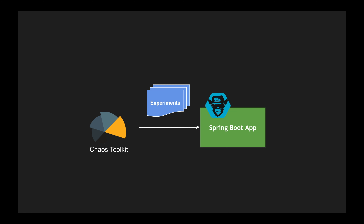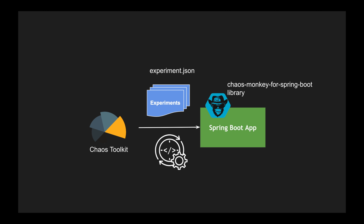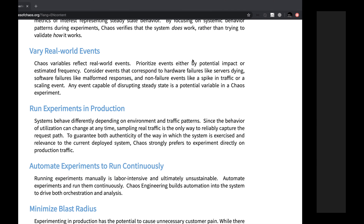For our demo, we are going to use only the Chaos Toolkit for one Spring Boot application with Chaos Monkey for Spring Boot. We are going to create a file called experiment.json, define the different experiments we want to run, use the Chaos Monkey for Spring Boot library in the existing application, and finally once we unfold the weaknesses, we are going to fix the application and rerun the Chaos Toolkit to check if the experiment has succeeded.